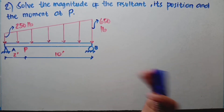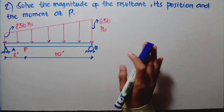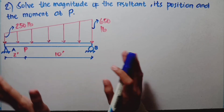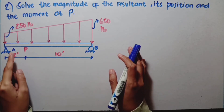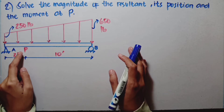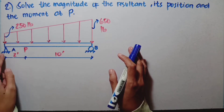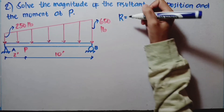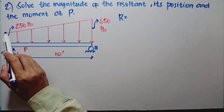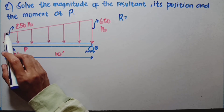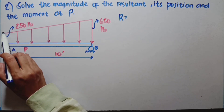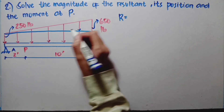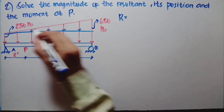For our problem number 2, and also the last problem: solve the magnitude of the resultant, its position, and the moment at P. Same as our first problem, but the difference here is we also need to solve the moment at point P, which is 2 inches from the hinge. For our resultant, it's better to split it into two types of load — triangular and uniform. When we cut it, we get a triangular load and a uniform load.